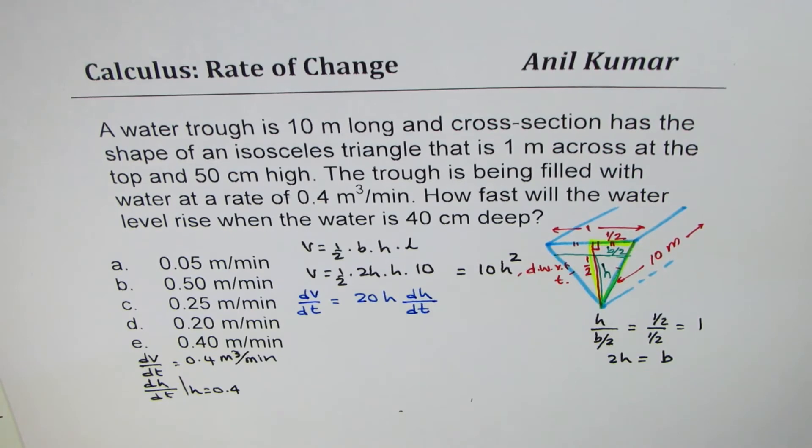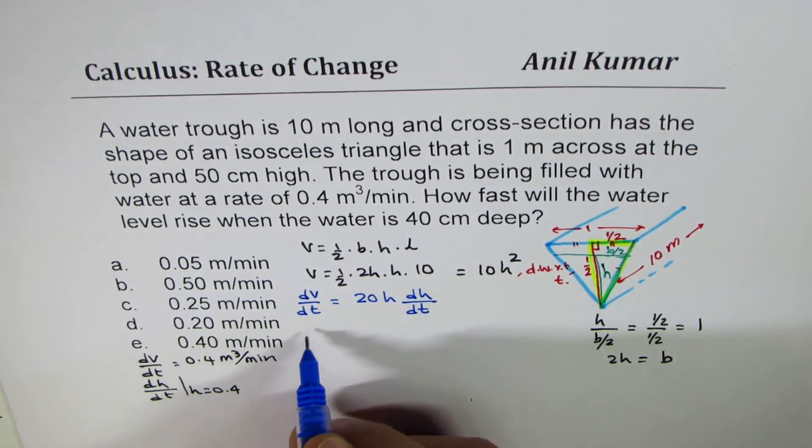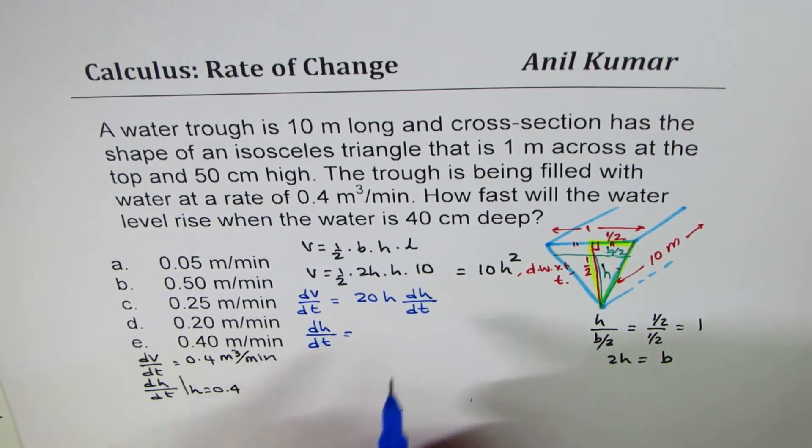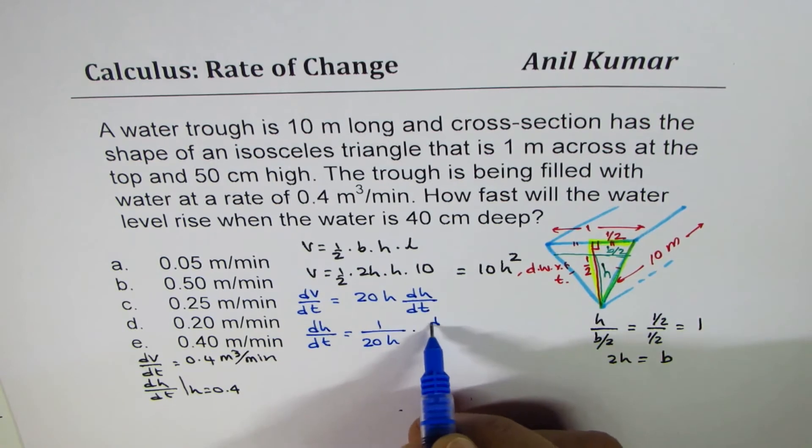20 h dh/dt. So from here we can find what dh/dt is. So dh/dt is indeed equals to 1 over 20 h times dv/dt. Perfect.